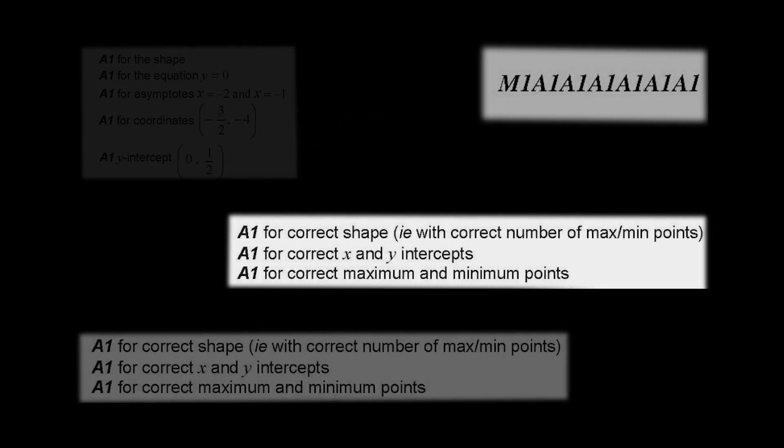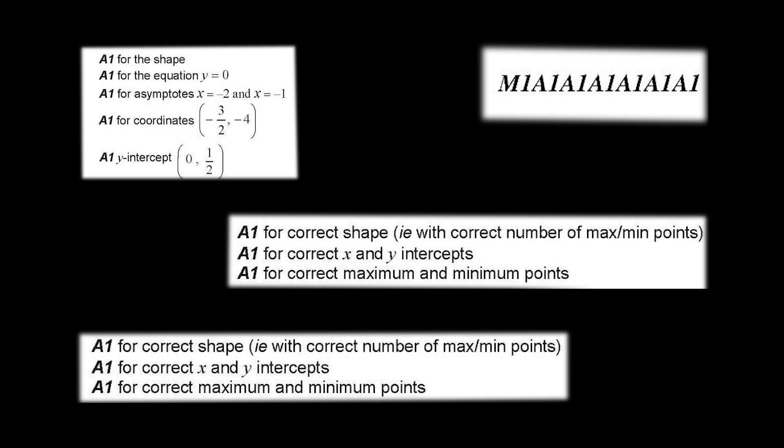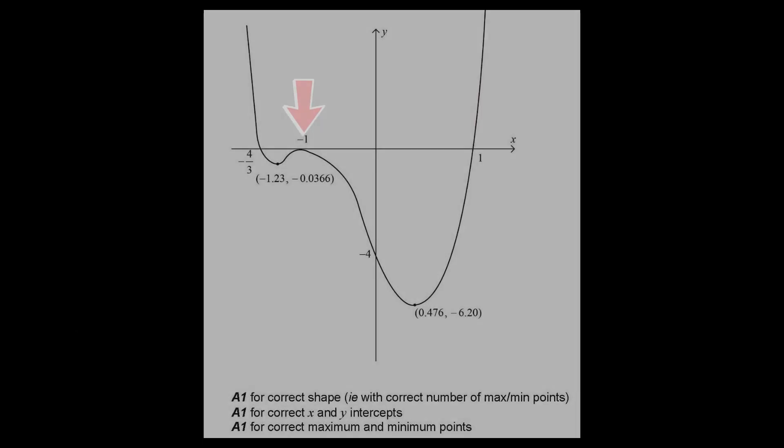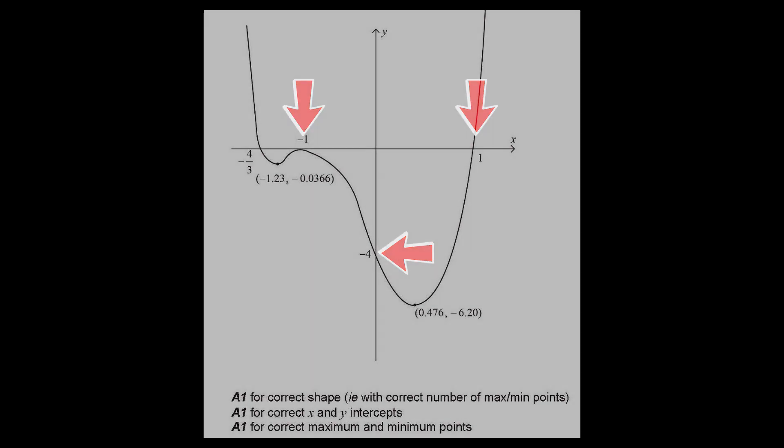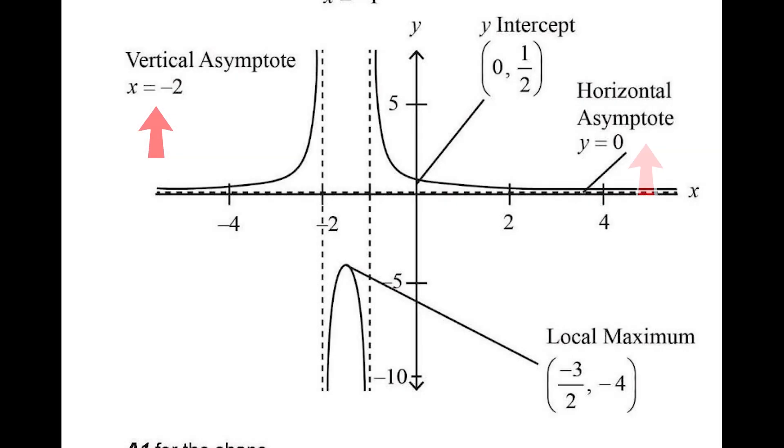When drawing a function graph on your answer sheet, make sure to include the following four elements. A, axis intercepts, both on the x-axis and y-axis. B, asymptotes,